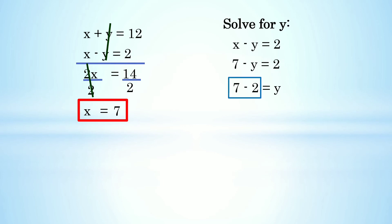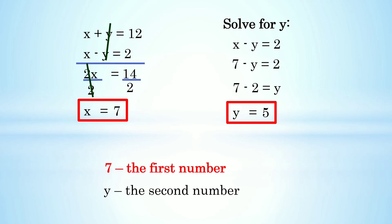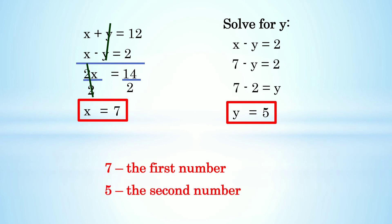So 7 - 2 = 5, the value of y is equals to 5. Si x yung ating first number at si y yung ating second number. Ang value ng x natin ay 7, so 7 is our first number. Ang value ng y natin ay 5, so 5 will be our second number. To verify: 7 + 5 = 12 and 7 - 5 = 2 — tama po yung ating sagot. The two numbers are 7 and 5.